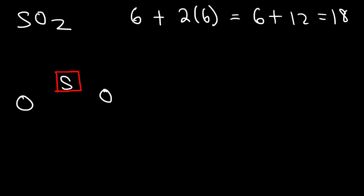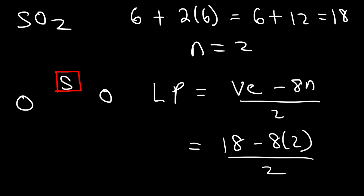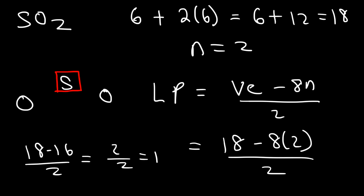Sometimes you may have more than one central atom, but typically there's only one. So in this example, n is going to be two. The number of lone pairs is going to be the valence electrons minus 8n divided by two. So we have 18 minus 8 times 2 divided by 2. Eight times two is 16, and 18 minus 16 is 2, and 2 over 2 is 1. So therefore, sulfur has only one lone pair.